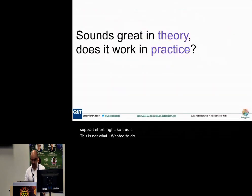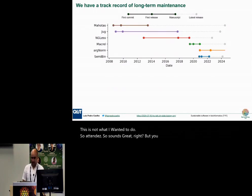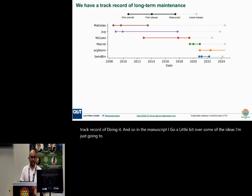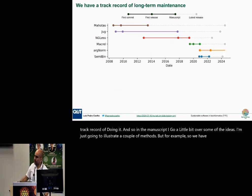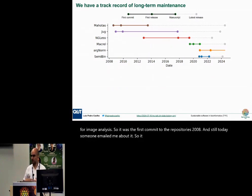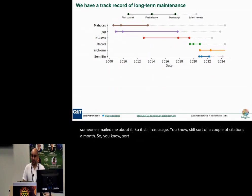So that sounds great — but does it work? We do have a track record of doing it. In the manuscript I go over some of the ideas; I'll illustrate a couple of methods. For example, we have the library Mahottas for image analysis. The first commit to the repository is from 2008, and still today someone emailed me about it — it still has usage, still getting a couple of citations a month.